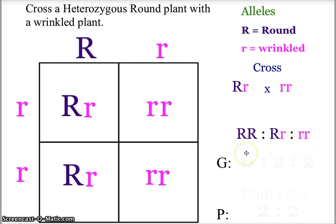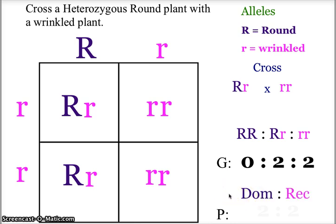In this case, none of our offspring have the possibility of being homozygous dominant. Two of our offspring have the probability of being heterozygous, and two have the probability of being homozygous recessive — a ratio of 0 to 2 to 2. The phenotypic ratio comparing dominant to recessive: two offspring carry the dominant allele and two are homozygous recessive, so two will be round and two will be wrinkled — a ratio of 2 to 2, or 50% dominant and 50% recessive.